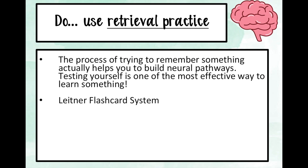One technique is the Leitner flashcard system. Go through your original notes and put anything you don't know on a flashcard — keep them simple, with a question on one side and the answer on the other. When you revise, test yourself on the flashcards; any you get wrong, put to the side. When you finish, test yourself again on only the ones you got wrong. Keep doing that until you've got them all correct within one session, then leave it a day and repeat, then leave it two days and repeat — combining this with spaced learning.